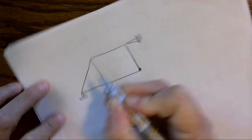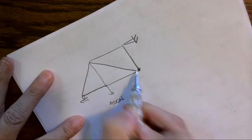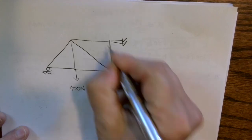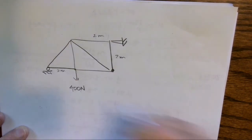So here we have a pin, and here we have a roller, and it looks kind of like this. This is two meters, two meters, two meters, 400 Newtons.